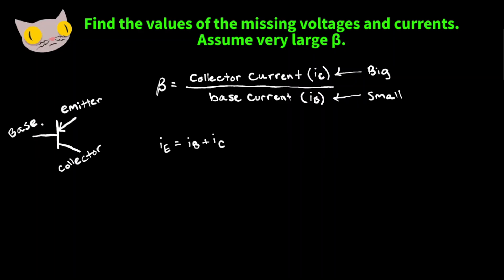This is a transistor symbol. We have the emitter pin here with the arrow, the collector pin here, and the base pin on this side. The relationship between the emitter current, collector current, and base current is: the emitter current equals the base current plus the collector current. Since the collector current is so large, we can neglect the base current and say the emitter current equals the collector current.